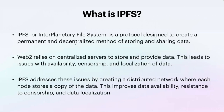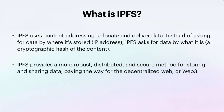IPFS uses content addressing, and this is where we're going to talk about CAR files. Content addressing is used to locate and deliver the data. Instead of asking for where the data is stored or an IP address, IPFS asks for the data by what it is — a cryptographic hash of the content. If the file never changes, the cryptographic hash never changes. This really leans into why we get velocity when using IPFS as a content-addressable Docker alternative or image repository.